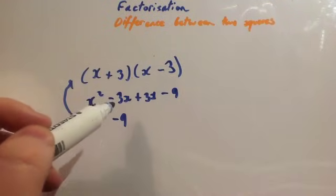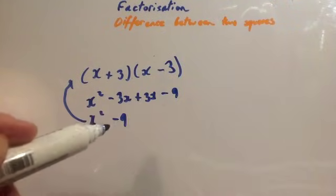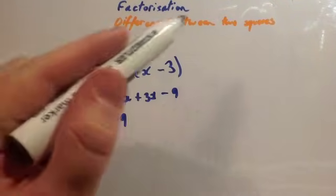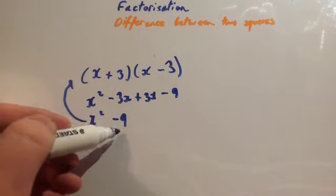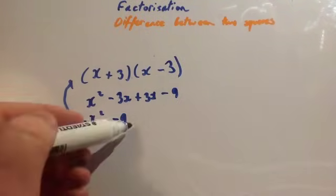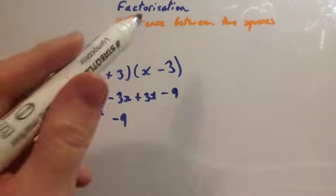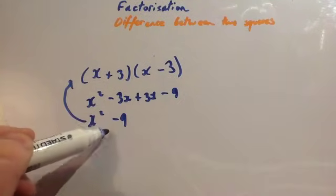Notice that whenever you have +3 and -3, when you do FOIL you're going to get -3x and 3x which has to give you 0. This is called difference between two squares because whenever you've got two squared expressions, so x² and 9 are both squared, that will only work if you've got a takeaway sign.